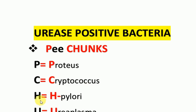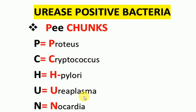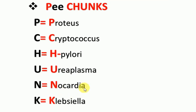H is for H. Pylori. H. Pylori causes H. Pylori infection. U is for Ureaplasma. Ureaplasma is a common cause of urethritis in men and genital tract infections in females.